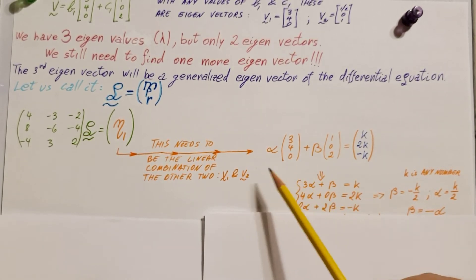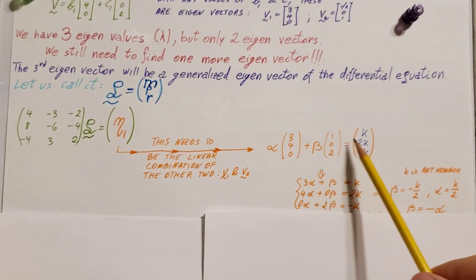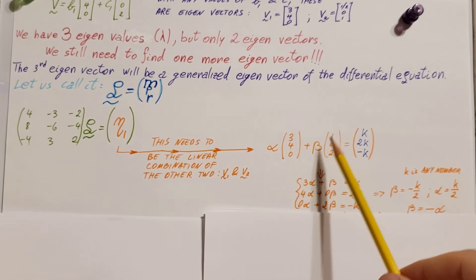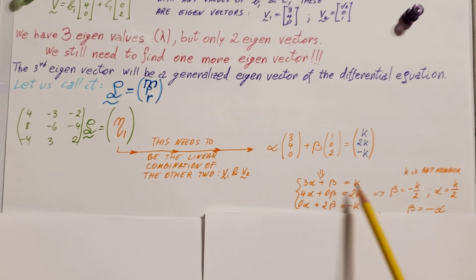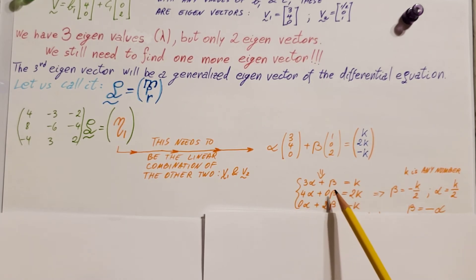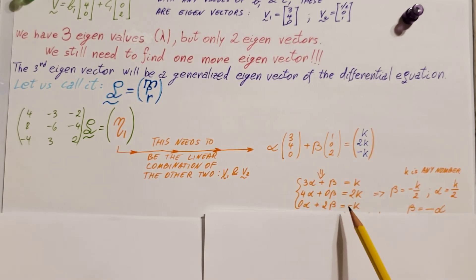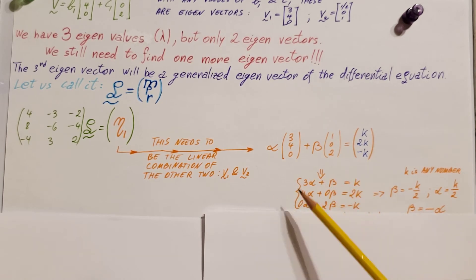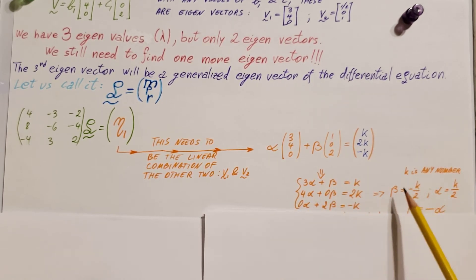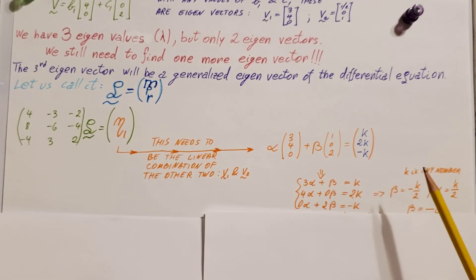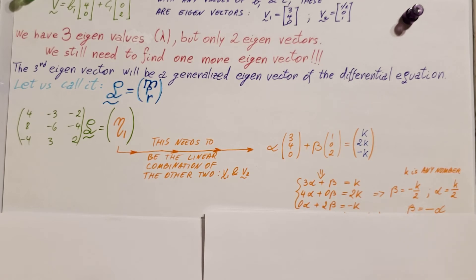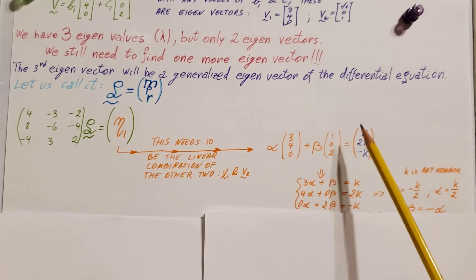Using this, let's write up our equations. 3 alpha plus 1 beta equals K. The other two equations give 4 alpha plus 0 beta equals 2K, and 0 alpha plus 2 beta equals negative K. Solving these, beta equals minus K over 2, alpha equals K over 2. K is just any number. From these two, equating them, we can see that beta is simply equal to negative alpha. I'm going to take this and plug it back in so I can find my K's.